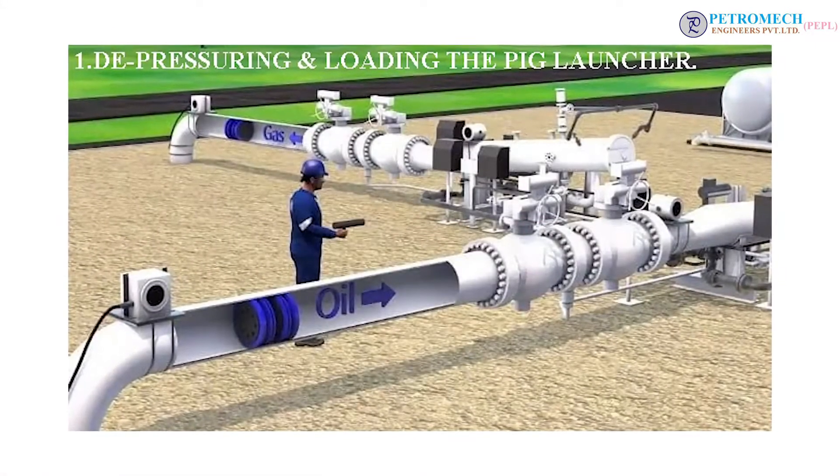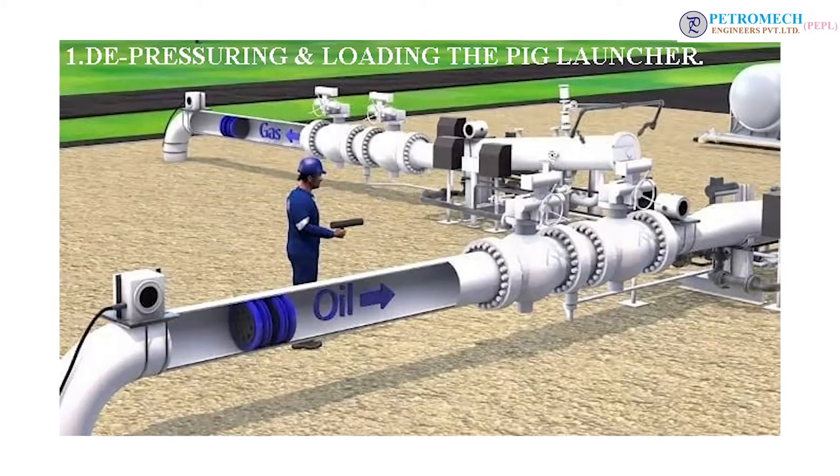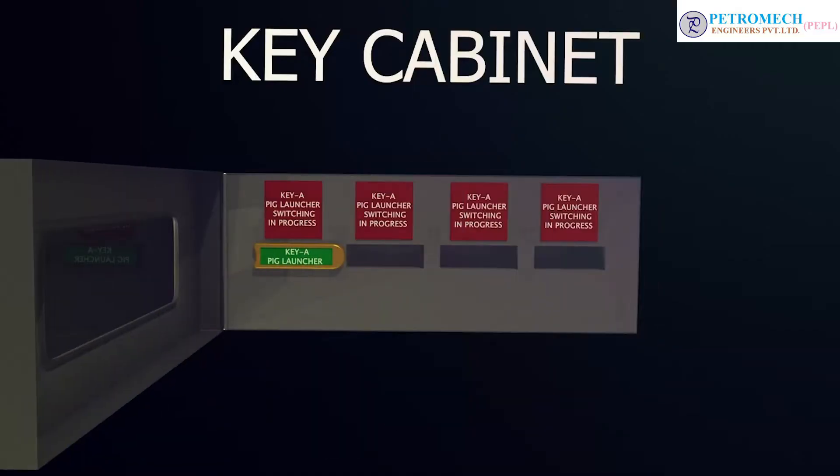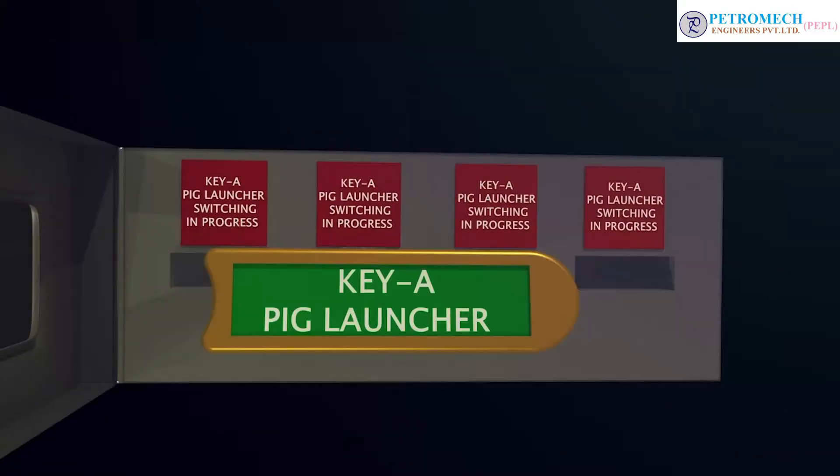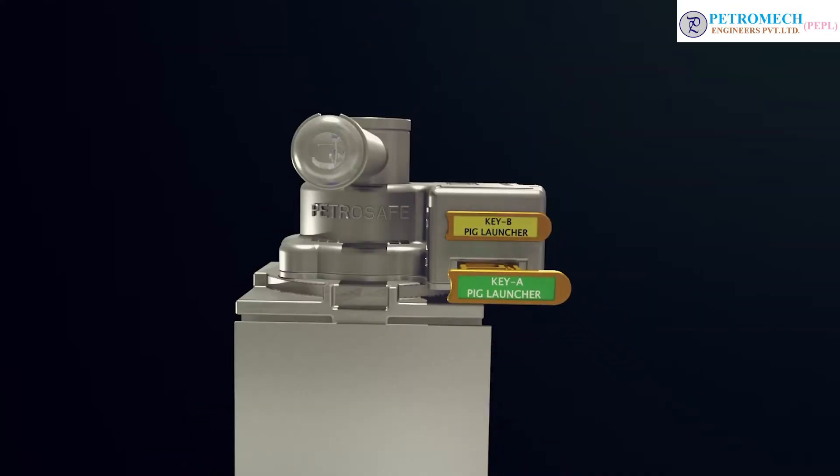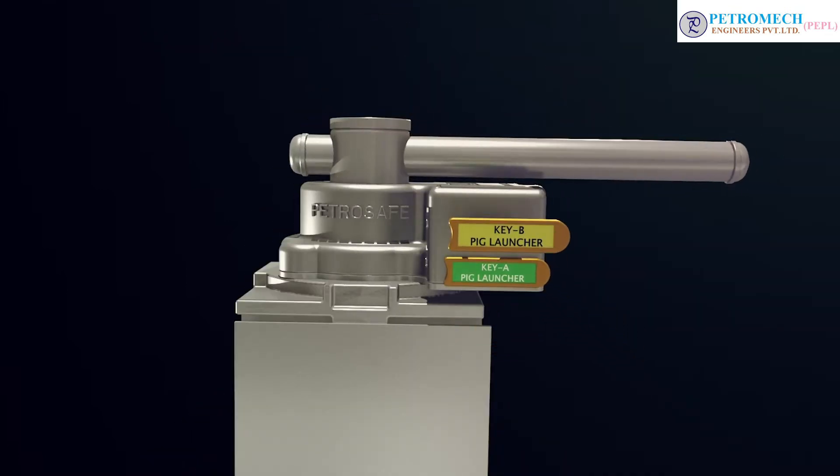Depressurizing and loading the pig launcher. Step 1: Key A is retrieved from the key cabinet. Step 2: Insert key A into vent valve V1. Open the valve and release key B.